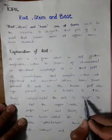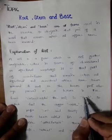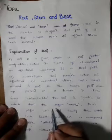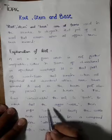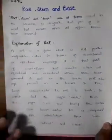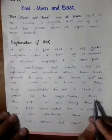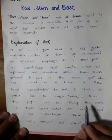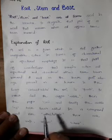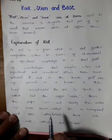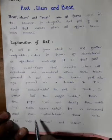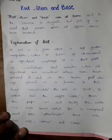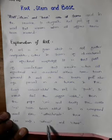In the form 'untouchables', the root is 'touch'. The word 'touch' cannot be further analyzed. First, the suffix '-able' is added, then the prefix 'un-', and finally the suffix '-s'. In a compound word like 'wheelchair', there are two roots: 'wheel' and 'chair'.